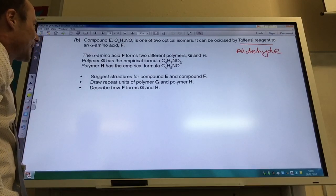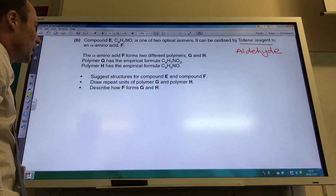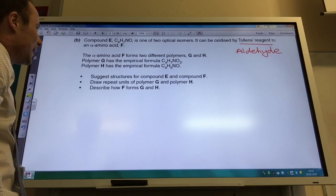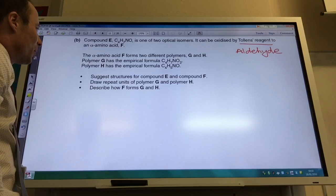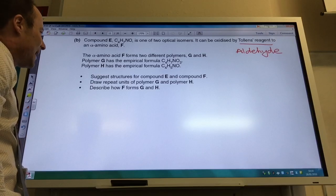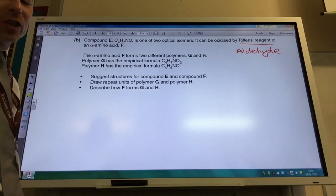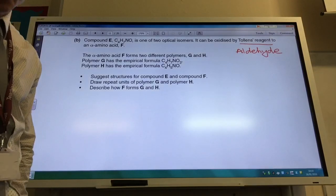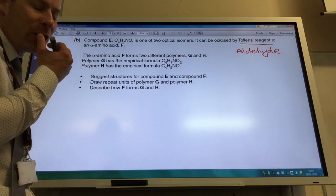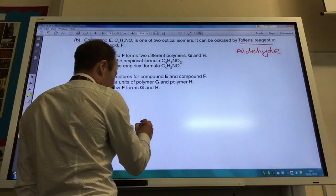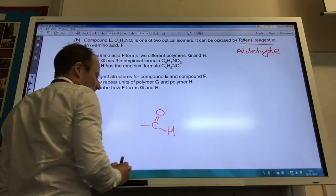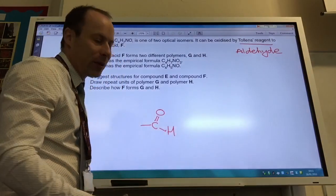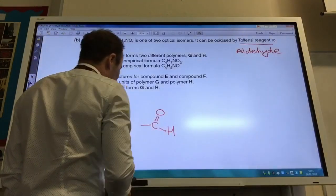So the alpha amino acid forms two different polymers. And I might perform the structures for E and for F. Draw repeat units of polymer G and H and describe how F forms G and H. So this is quite tricky, you know you've got an aldehyde group to begin with. So let's put that in there. He's got to be on the end because he's an aldehyde. Aldehydes always have to be on the end because otherwise it would be a ketone.